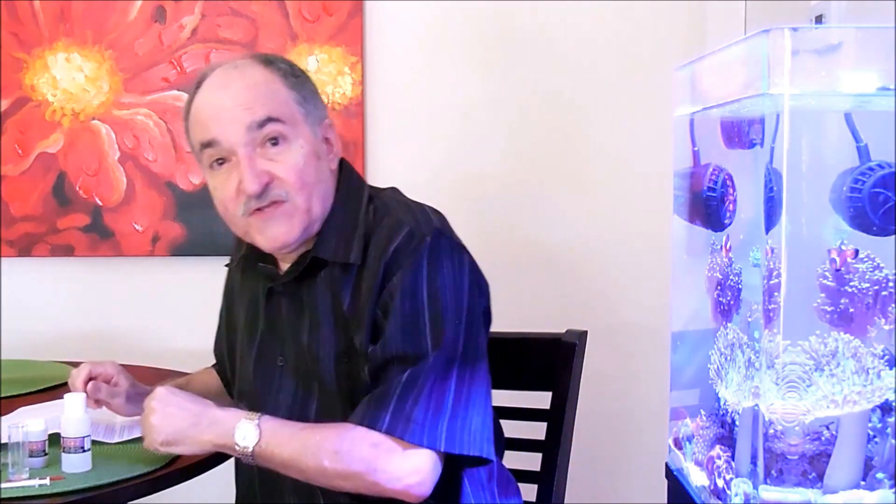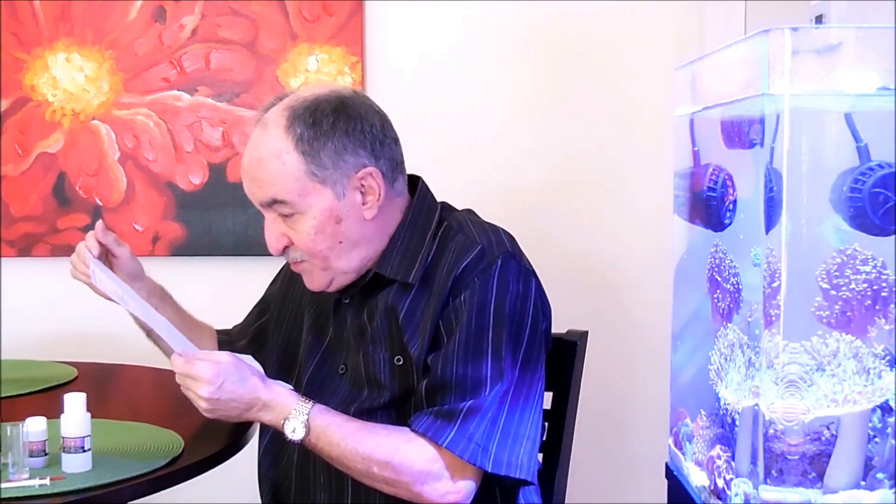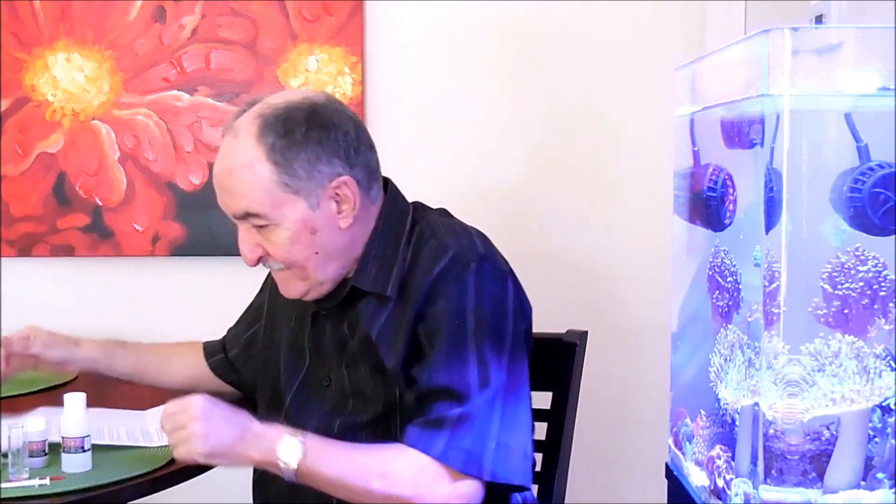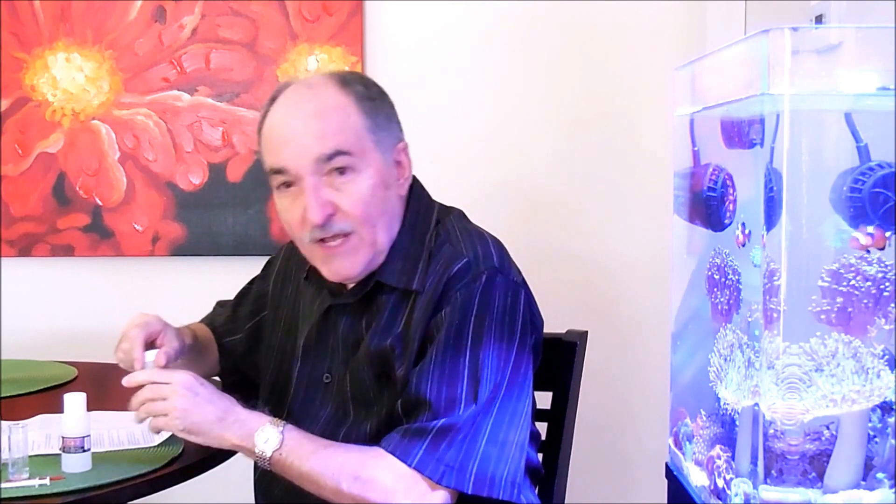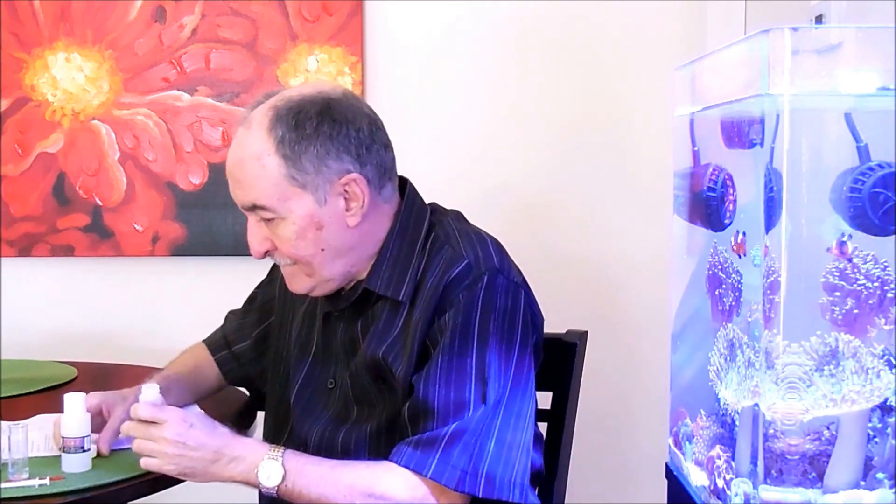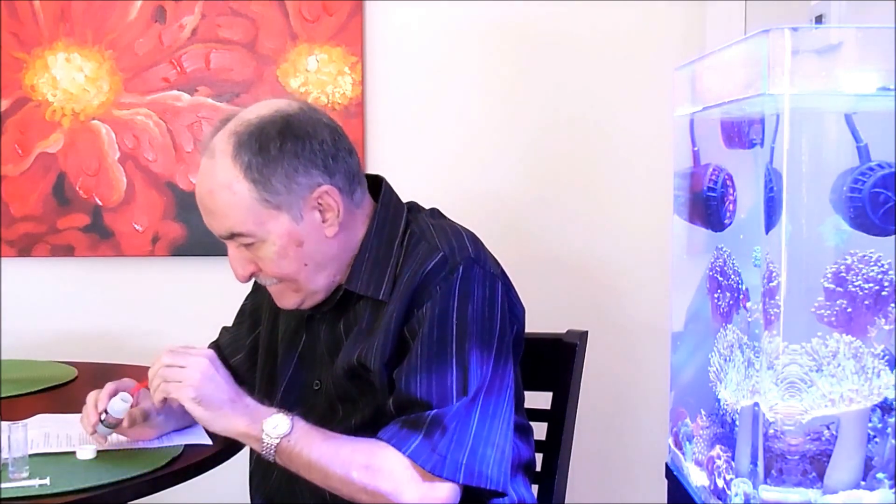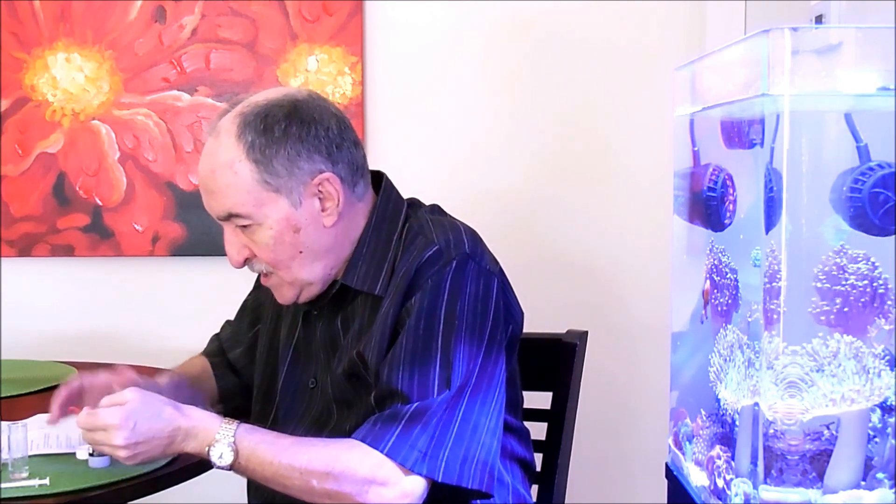Then the second step, it says to add 1 spoon of Cal 1. Cal 1 is this, so we're going to add 1 scoop. Let me put this over here. Here we are.